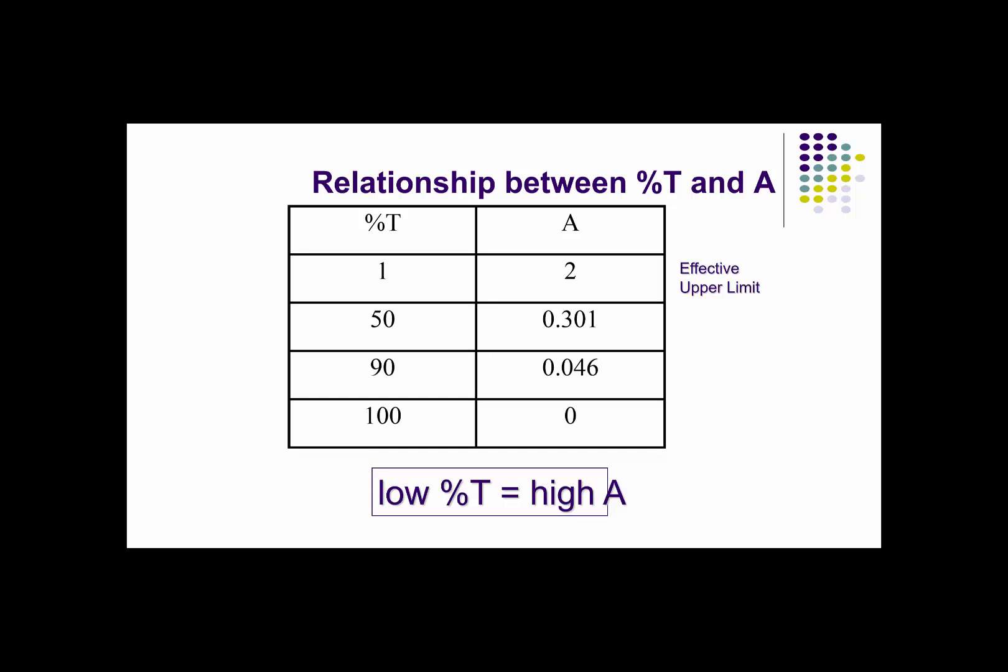Now let's consider what the information in this completed table tells us about the relationship between percent T and absorbance. Note that the values go from 1% T at the top upper left to 100% at bottom lower left. Let's start at the upper left. When percent transmittance is 1%, this means that only 1% of the light is being transmitted through the sample, and that means that the sample is absorbing most of the photons of light. This is reflected in the absorbance value of 2.